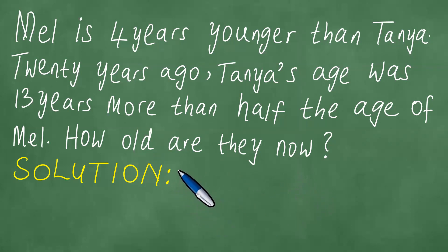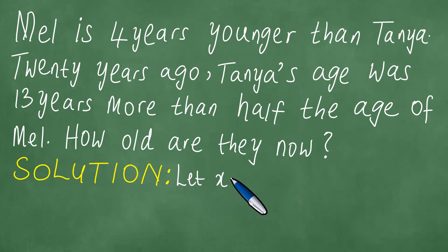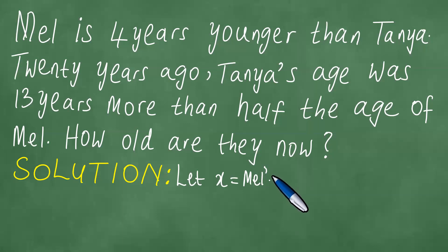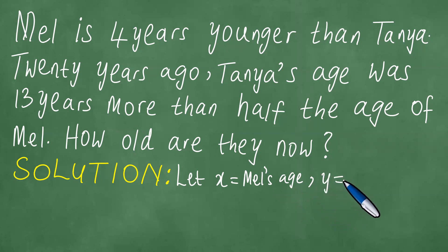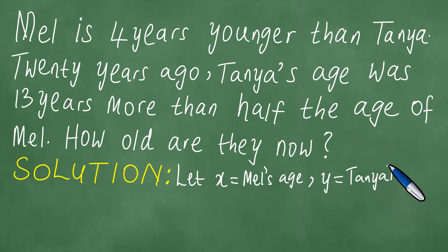To solve this problem, we let X be Mel's age. Simultaneously, we note that Y is Tanya's age.